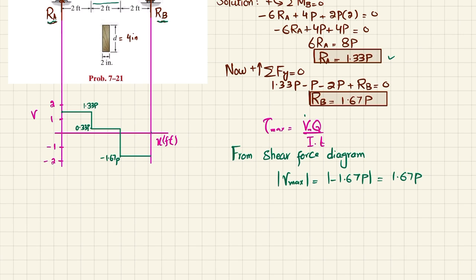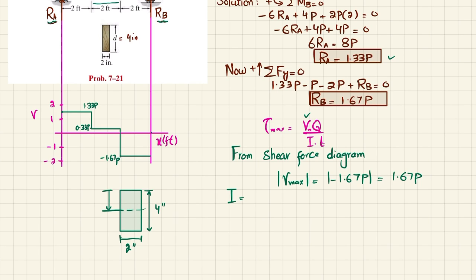Now we calculate the moment of inertia I. The cross-section of the beam is 2 inches wide and 4 inches deep. The neutral axis is at half of 4, which is 2 inches from either edge. Using the formula I equals (1/12) times b times h cubed: I equals (1/12) times 2 times 4 cubed, giving I equals 10.667 inch⁴.